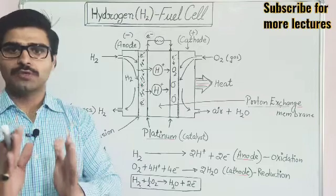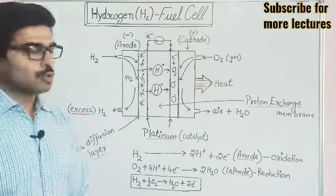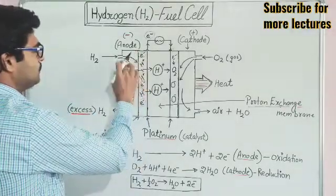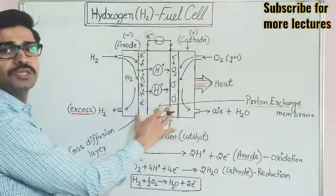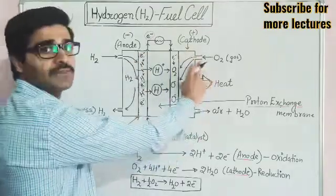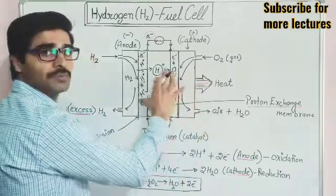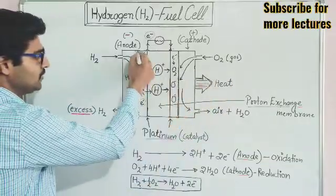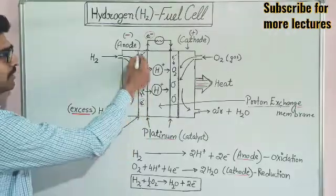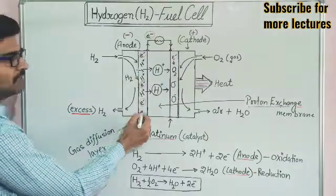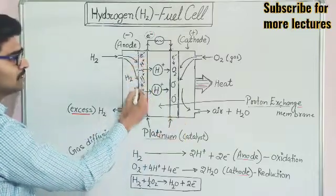Now let's look at the components of the hydrogen fuel cell. Here we have an inlet for hydrogen and an outlet for excessive hydrogen which is not used in the reaction. Similarly, we have an inlet for oxygen and an outlet for oxygen, as well as for the water that is formed. Next to this, we have a layer known as the gas diffusion layer — one for oxygen and one for hydrogen.